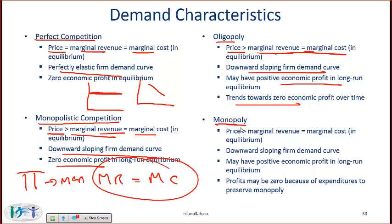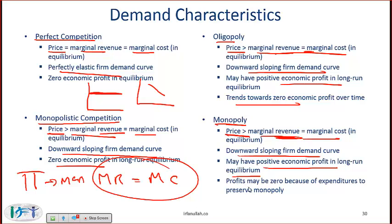With a monopoly, price can again be greater than marginal revenue. An unregulated monopoly will try to make marginal revenue equal to marginal cost to maximize profit. The demand curve is downward sloping and the monopoly might actually have economic profit in the long run, though profits may be zero because of expenditures to preserve the monopoly.